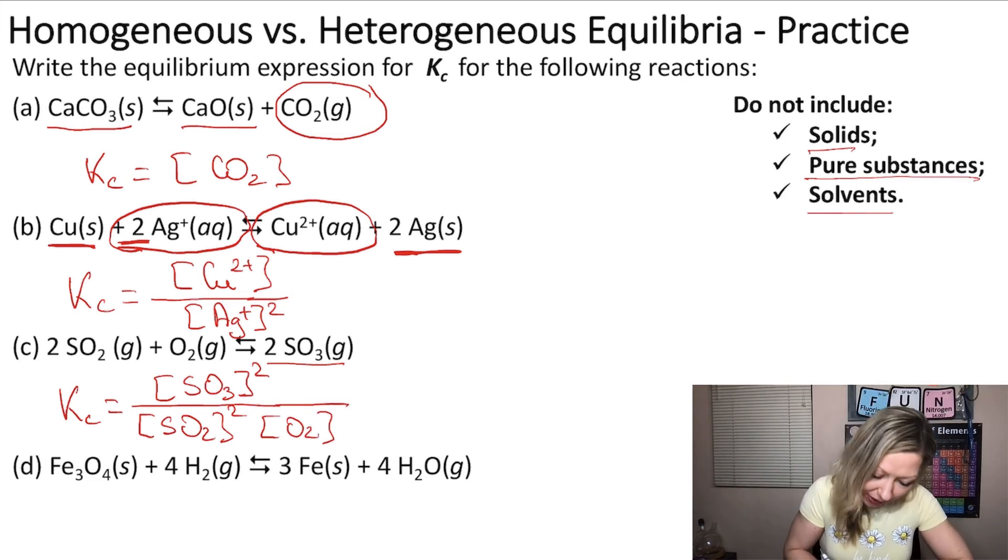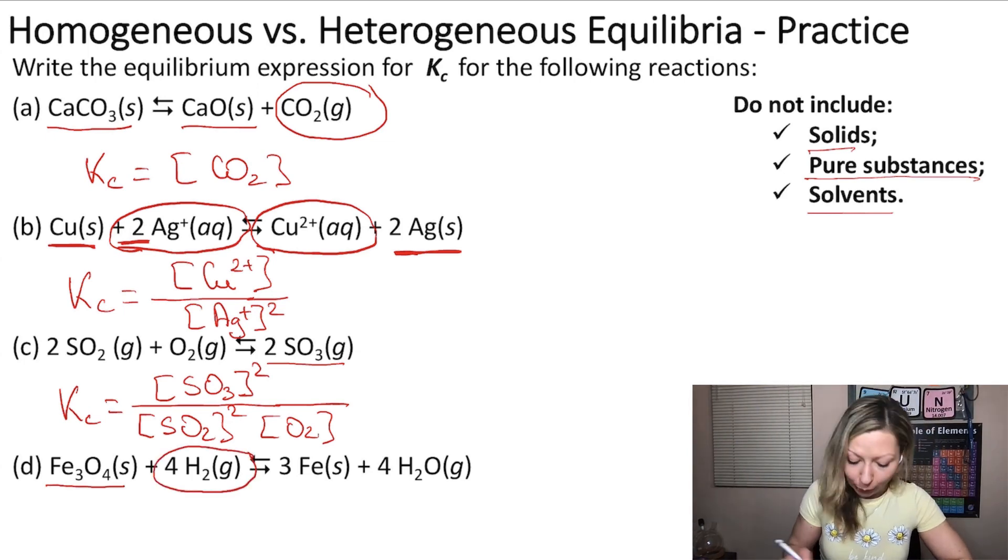All right, what about the last reaction? So here we have iron 3 oxide, which is a solid. It's going to be excluded. We have hydrogen gas included, iron solid, again, excluded, and water in a gas phase, included in our Kc expression.